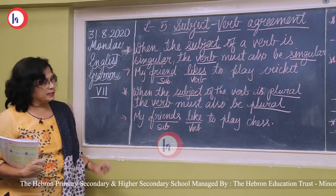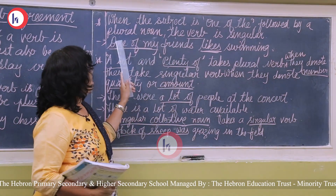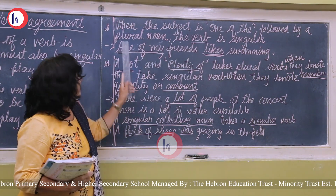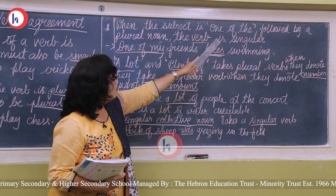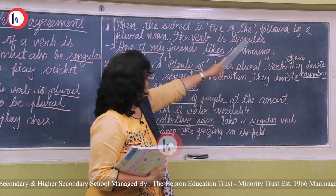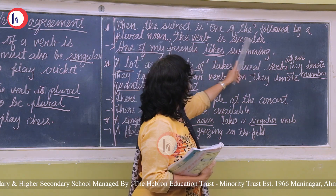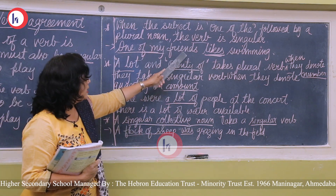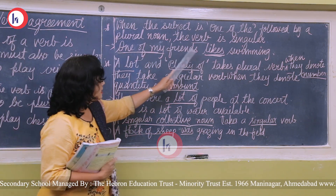When the subject starts with 'one of the' followed by a plural noun, the verb is singular. For example, 'one of my friends likes swimming.' Here 'friends' is the plural noun, but because it starts with 'one of the,' we use the singular verb 'likes,' not 'like.'